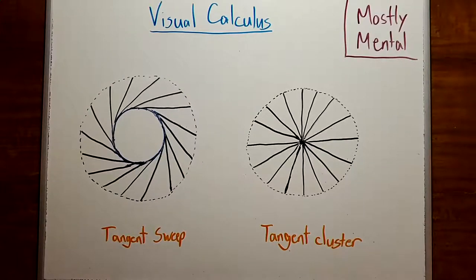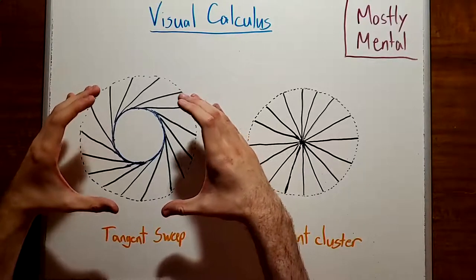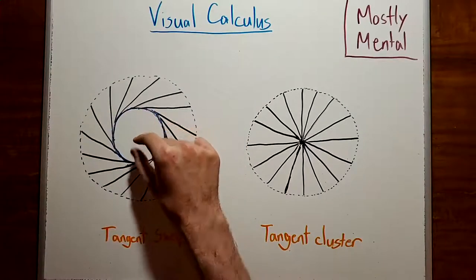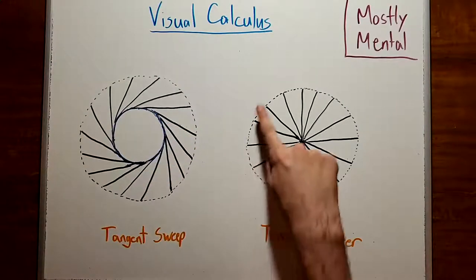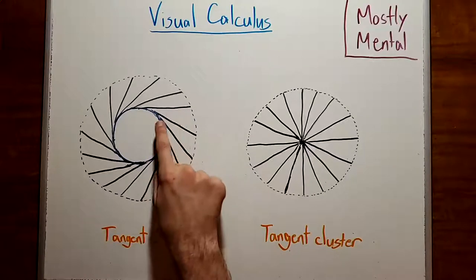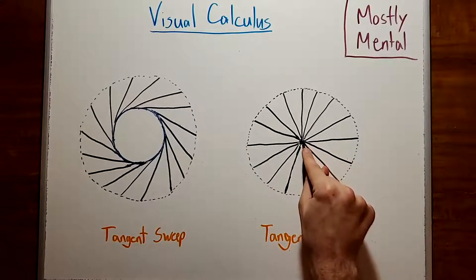And that shape looks a lot like the aperture of a camera. And if we were to squeeze it shut, so contract this circle to a single point, we would end up with a circle like this one, where all of these tangent segments have been clustered together at a central point.